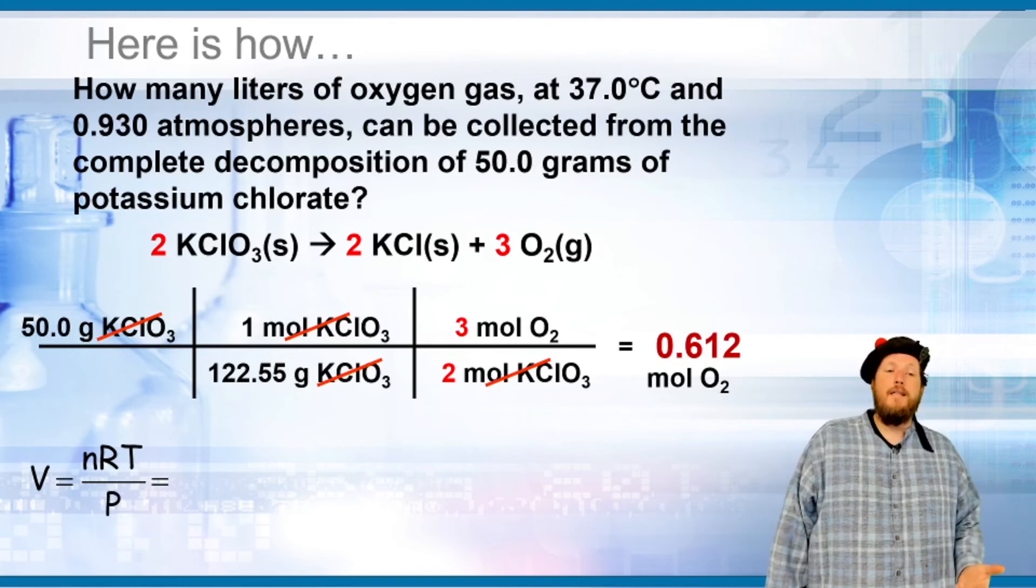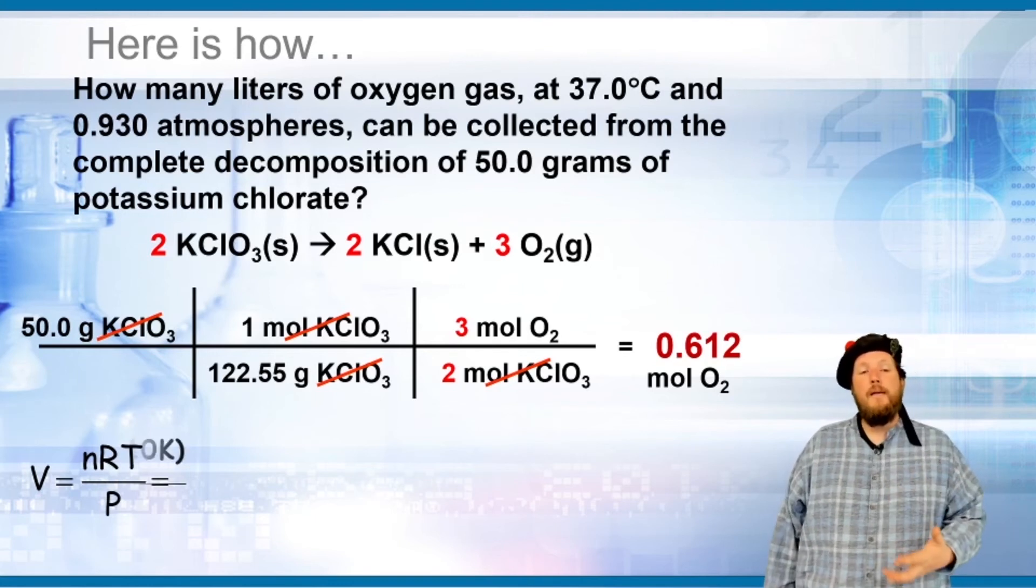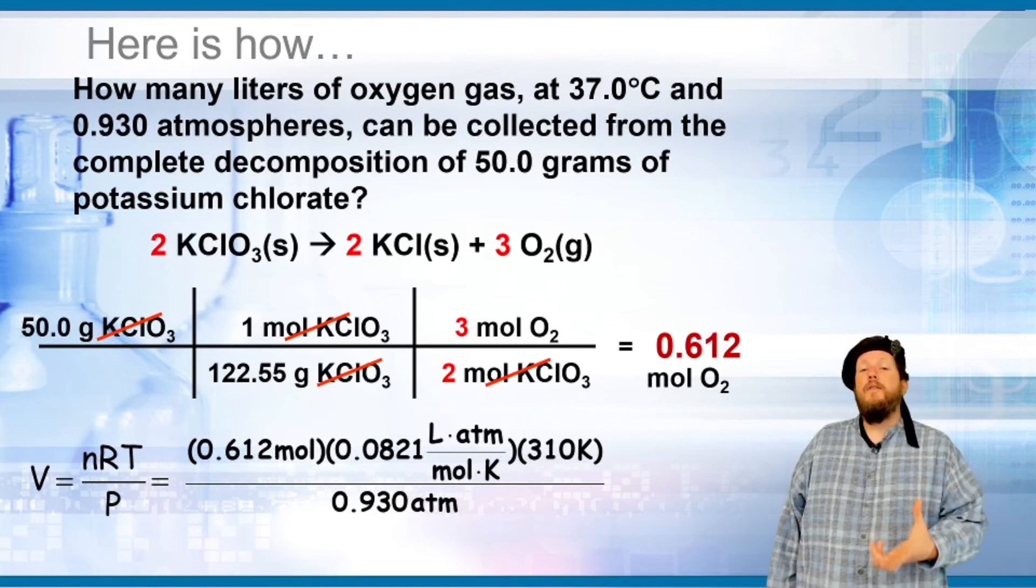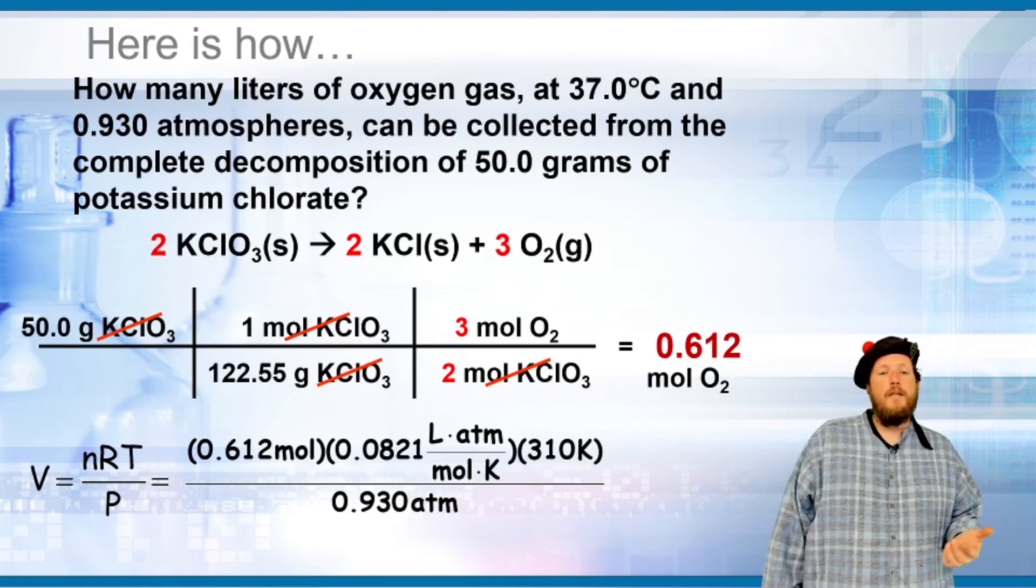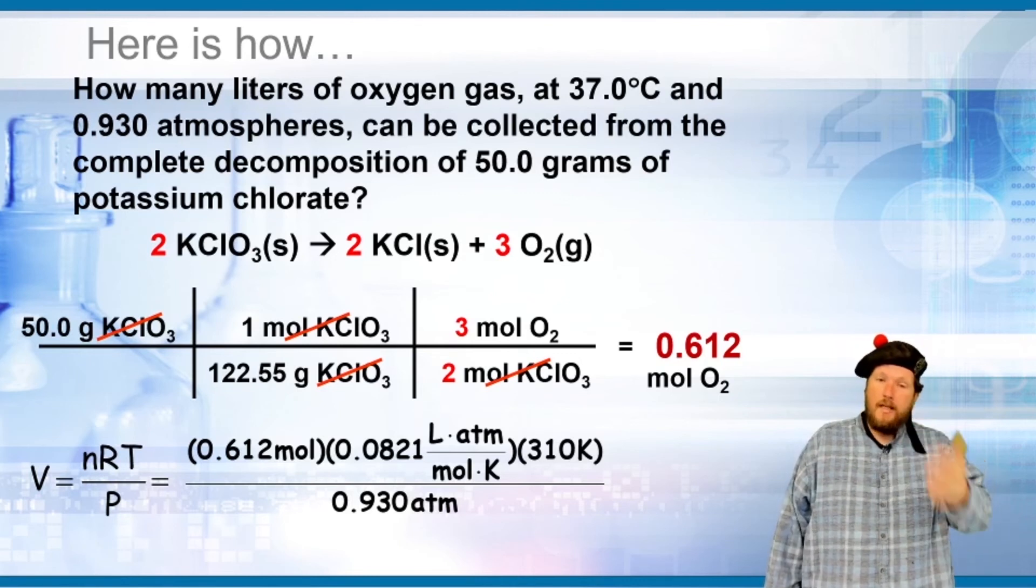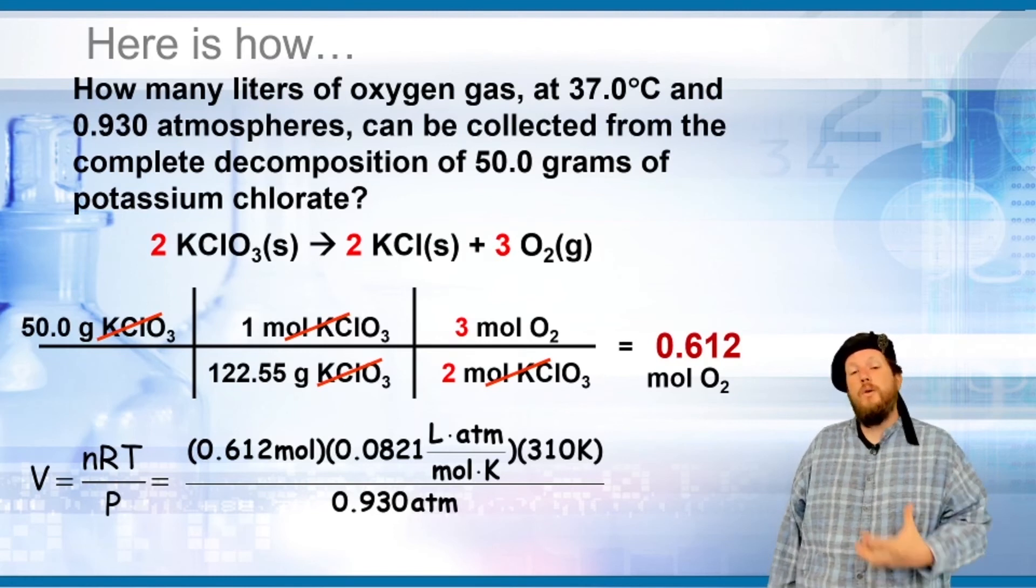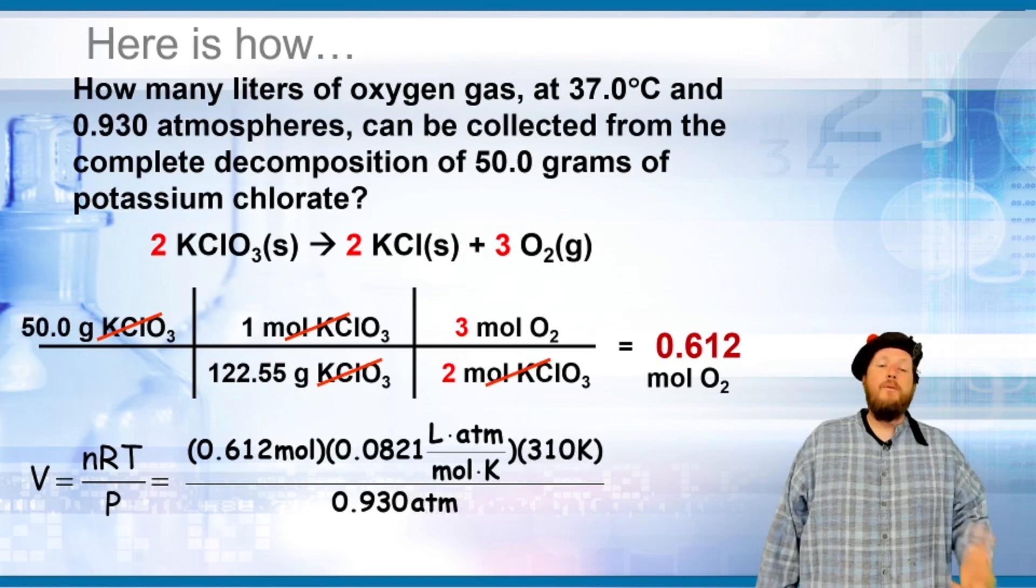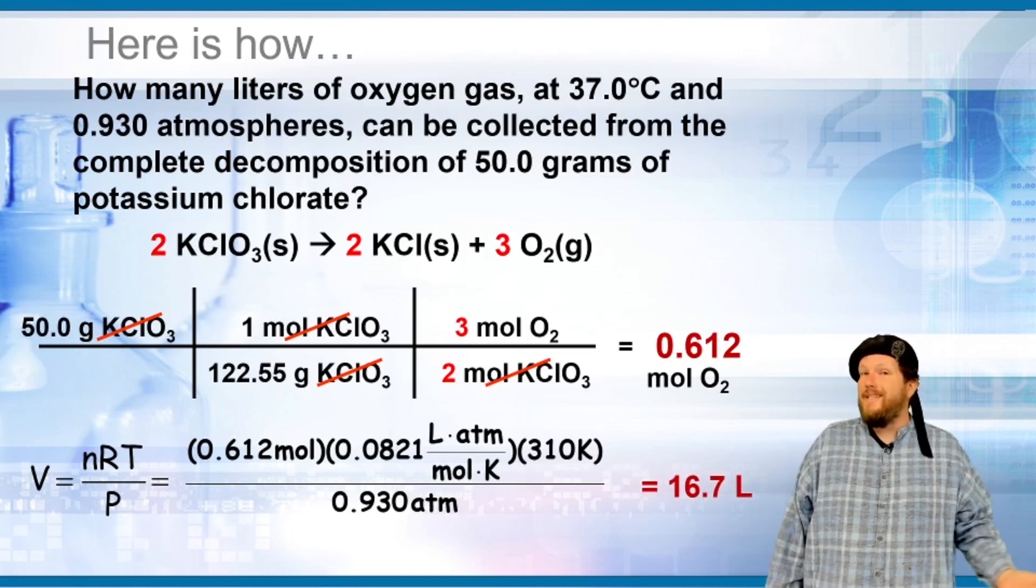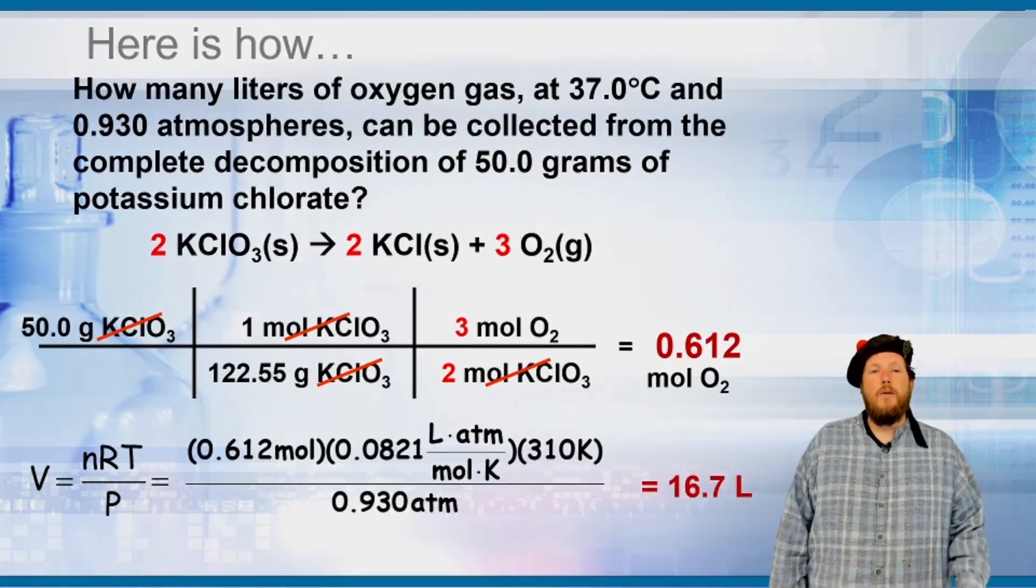We rearrange the ideal gas equation to V = nRT/P. We put in the moles (0.612), the R value (0.0821 L·atm/mol·K), the temperature in Kelvin (we must convert from Celsius), and the pressure in atmospheres. This gives us 16.7 liters of oxygen produced.